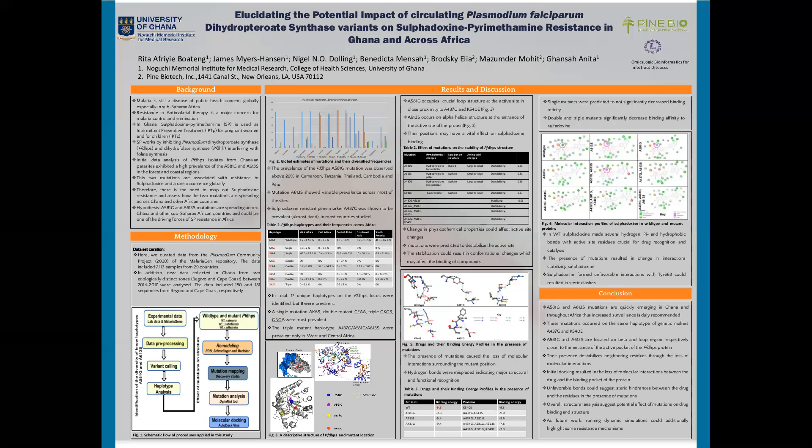The mutations resulted in a change in physicochemical properties of the protein, which could affect active site drug recognition. Additionally, mutations were predicted to destabilize the active site by disrupting molecular interactions crucial for catalysis. This destabilization could result in conformational changes which may affect the binding of the compound sulfadoxine.